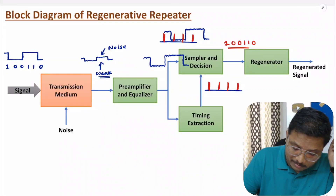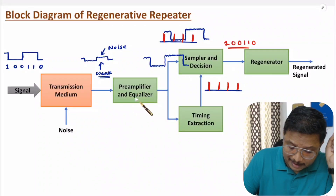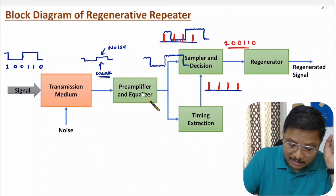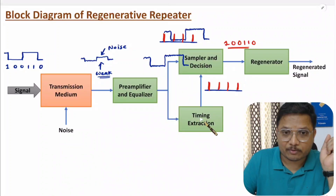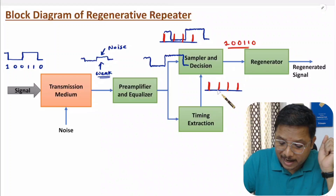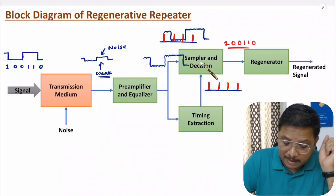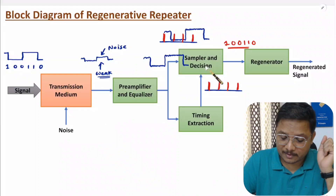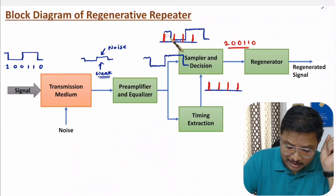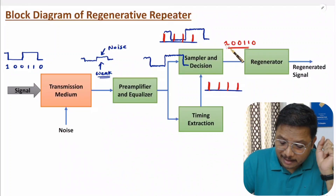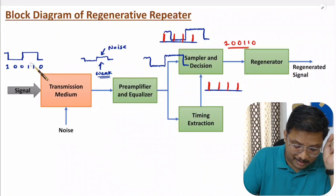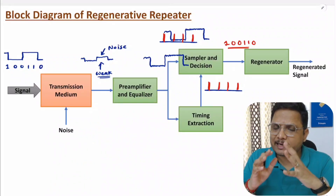So that is how this regenerative repeater is functioning. First, it preamplifies the signal passing through the equalizer. The equalizer reshapes the signal and the preamplifier amplifies the weak signal. This signal is given to the sampler and decision circuit as well as to the timing extraction unit. The timing extraction unit gives idea about at what instances the sampler and decision-making circuit should take a decision. Once we have digital data, it is given to the regenerator circuit which generates the signal again. That is how this entire block diagram works.